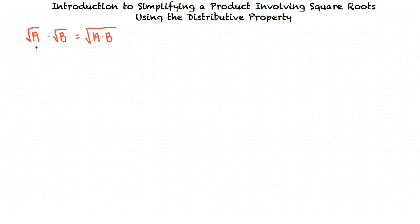This video will cover the topic: Introduction to Simplifying a Product Involving Square Roots Using the Distributive Property. Simplifying a product involves multiplication, and the multiplication will involve square roots. We'll need to remember the property: the square root of a times the square root of b equals the square root of a times b. This will help us as we simplify the problems given to us.